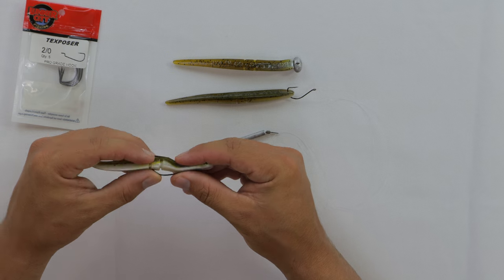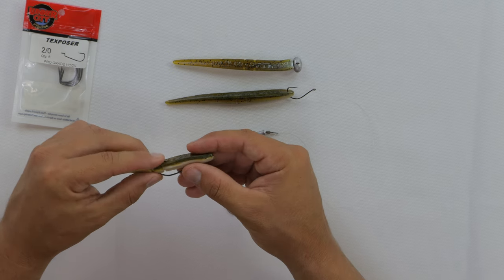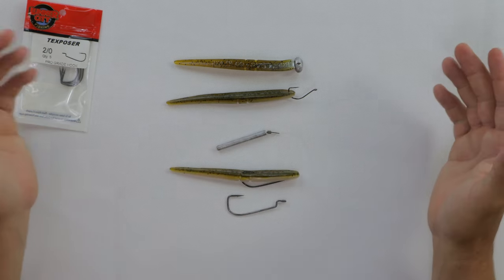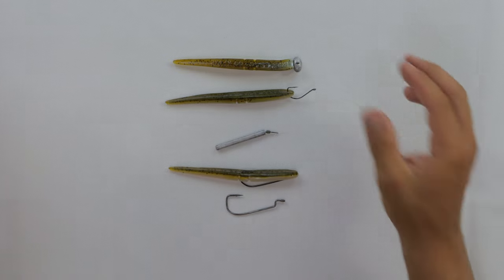And that's going to give you a true weedless setup. And what happens is when the fish eats it, it compresses the bait and exposes the hook. So those are three different ways you can rig the four and a half inch Sluggo.